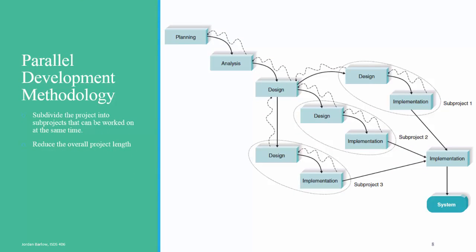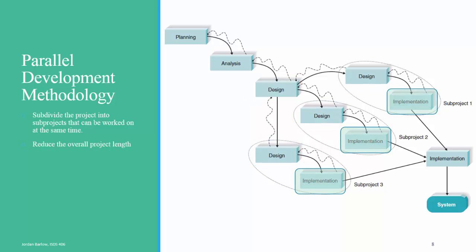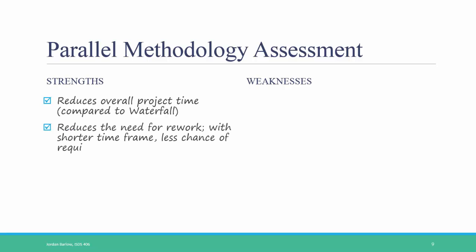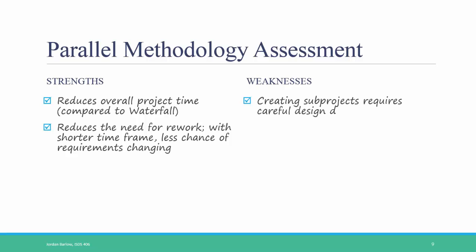Here's what parallel development methodology looks like. Again, you start with your planning phase and do all of your planning before you move on to your analysis phase. Once your analysis is full and complete, then you move on to a general design of your system. At that point, you break up your project into several subprojects, and for each subproject you simultaneously work on designing and implementing those subprojects. Then at the end, you bring all of your subprojects together into one big system implementation. The strengths of the parallel methodology are that, in comparison to the traditional waterfall, it reduces the overall project time because you are able to work on multiple subprojects at once. It also reduces the need for rework. With a shorter time frame, you have less chance of the requirements changing from beginning to end. The weaknesses are first that you have to create the subprojects, which requires some careful design decisions up front. It's hard to know exactly how to split up your project into different subprojects, and it's also hard at the end to integrate subprojects if they are complex and difficult.